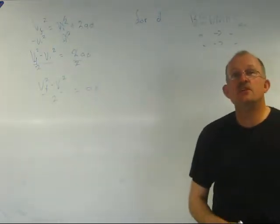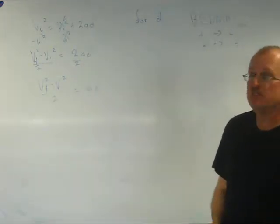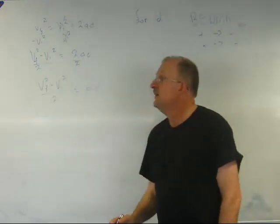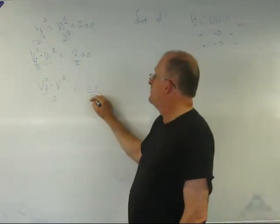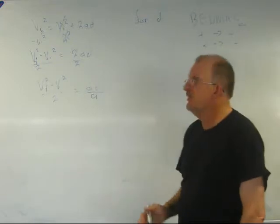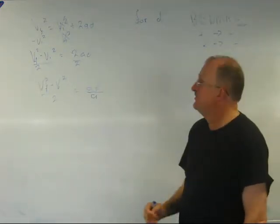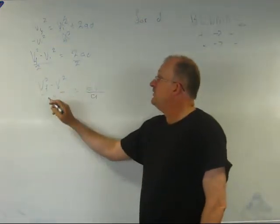Now, anything else multiplying d? The answer is a. So I divide this side by a. Because remember, the opposite of multiplication is division. And I divide this side by a.